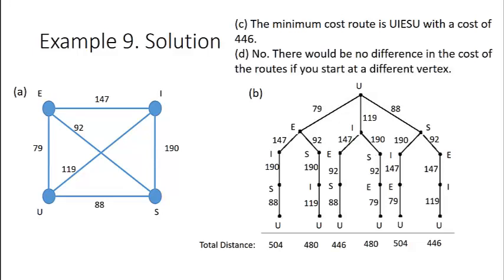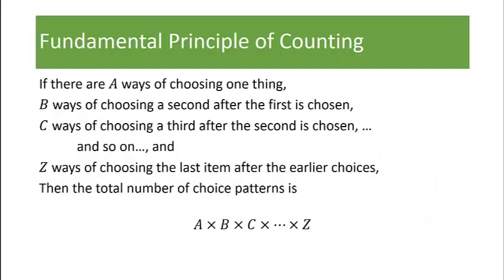And no, there would be no difference in the cost of routes if we were to start at a different vertex. The total distance of each route doesn't matter what your actual starting and ending point is.